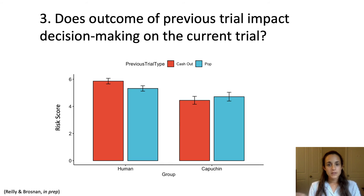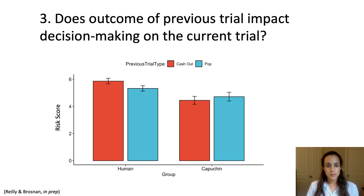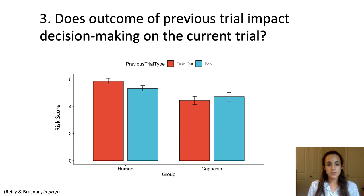We also wanted to know whether the outcome of a previous trial impacted decision-making on the current trial. In other words, if the previous trial was a popped trial, would the capuchin act more or less cautiously on the current trial? We looked at this in humans as well. What we found is that capuchins didn't really adjust their behavior based on the previous trial type. Humans as a group showed overall higher risk scores than capuchins, but there was not a significant difference in how either species responded to previous trial outcomes.